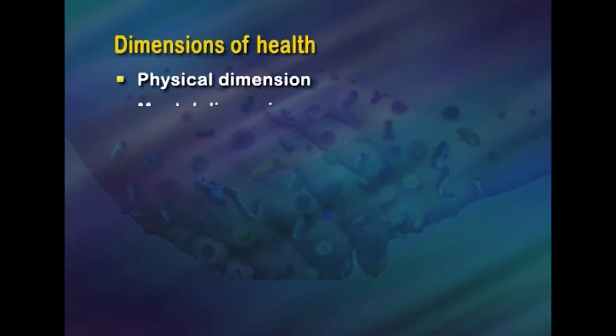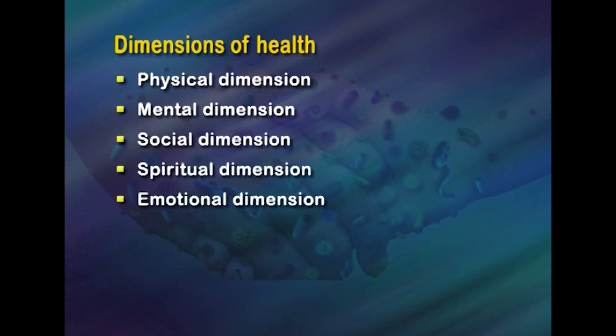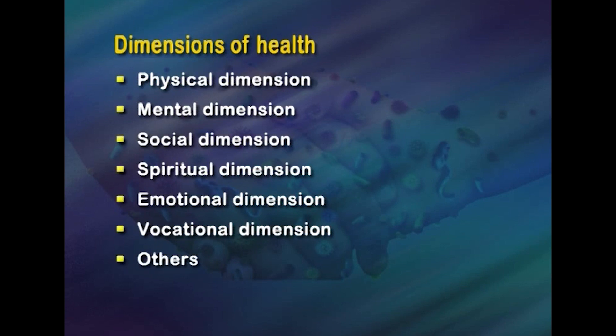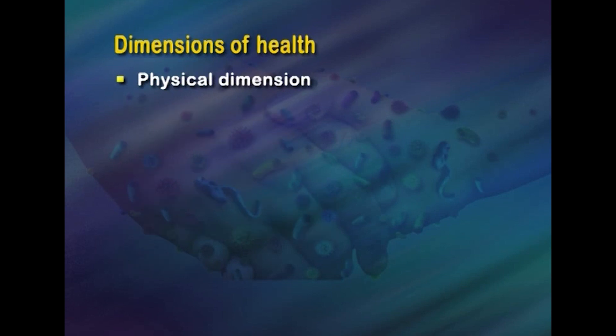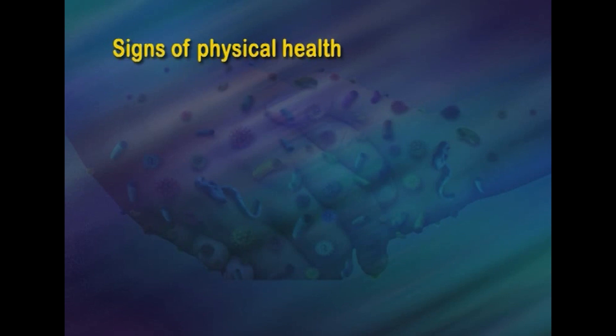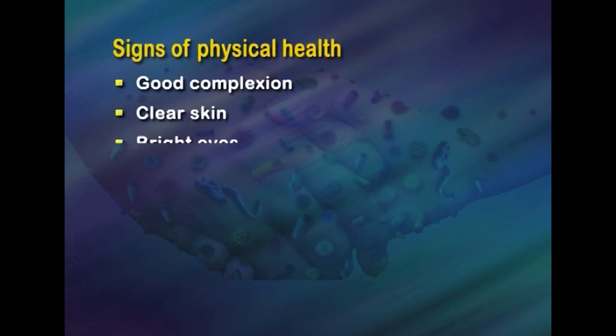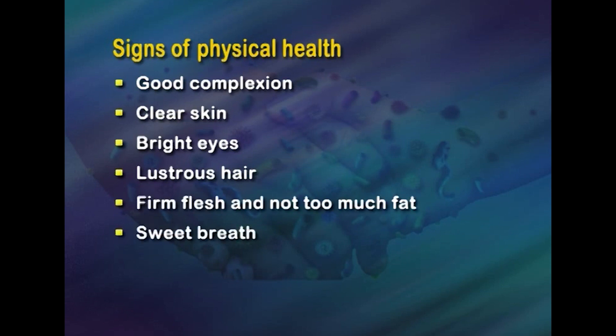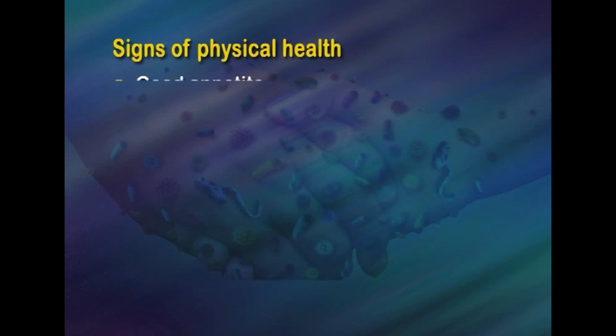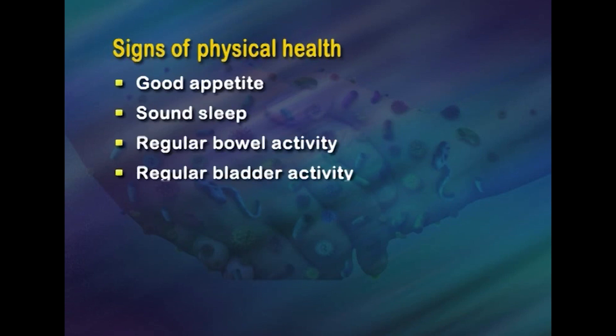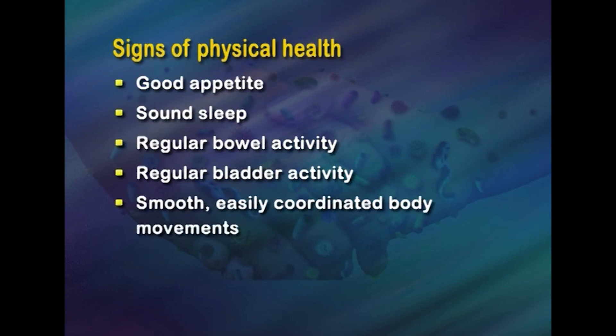The dimensions include physical, mental, social, spiritual, emotional, vocational, and others. Coming to the physical dimension, the state of physical health implies the notion of perfect functioning of the body. It conceptualizes health biologically as a state in which every cell and every organ is functioning at optimum capacity and in perfect harmony with the rest of the body. The signs of physical health in an individual are good complexion, clear skin, bright eyes, lustrous hair, and firm flesh.